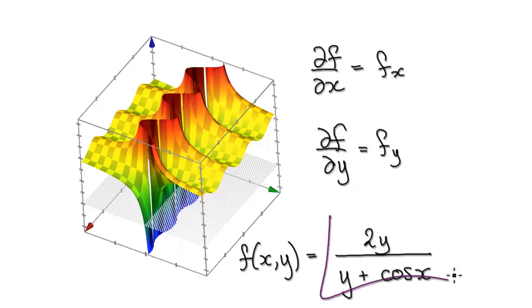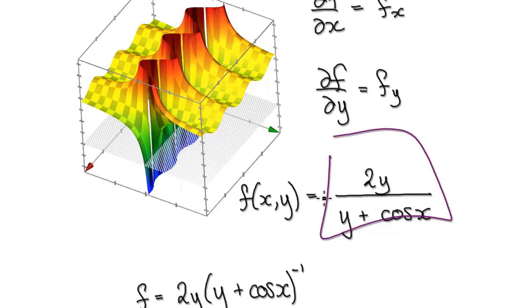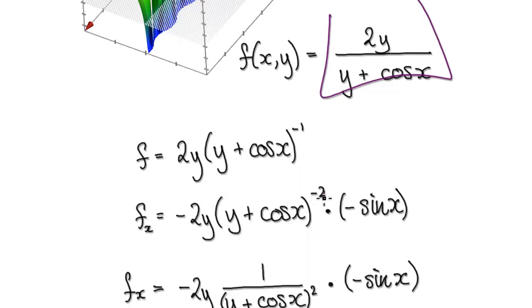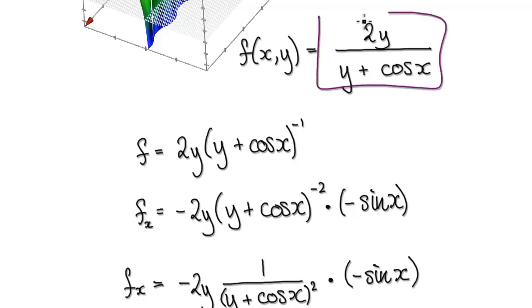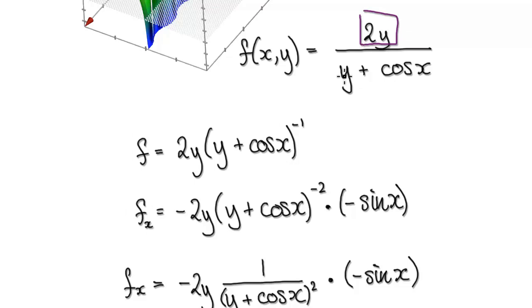Let's partially differentiate this with respect to x, and later we'll do it with respect to y. Our first step is to find the partial derivative with respect to x. Imagine this function as one block dividing by another block.